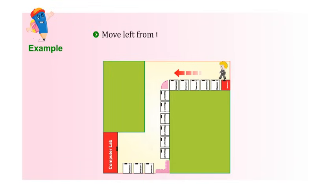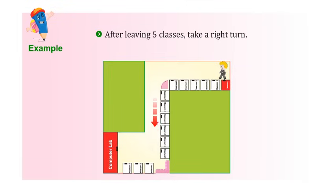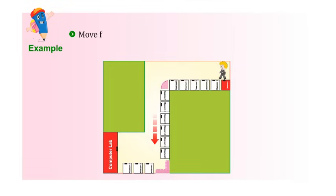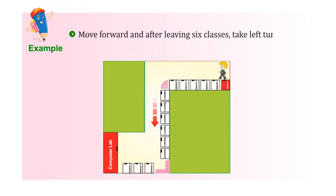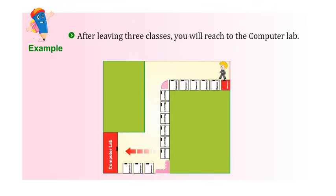Move left from the class and go straight. After leaving five classes, take a right turn. Move forward and after leaving six classes, take a left turn. After leaving three classes, you will reach the computer lab.